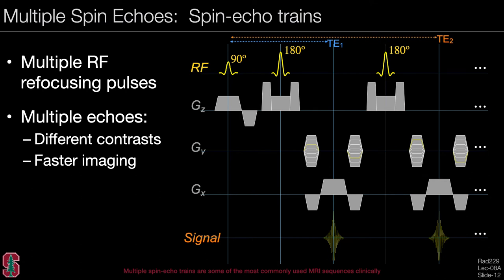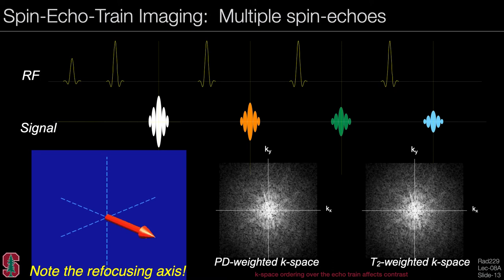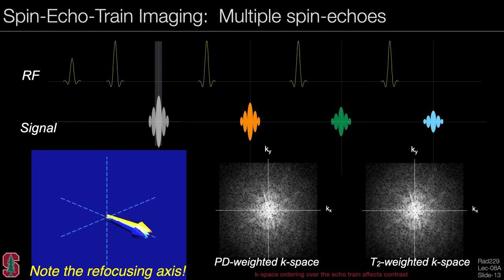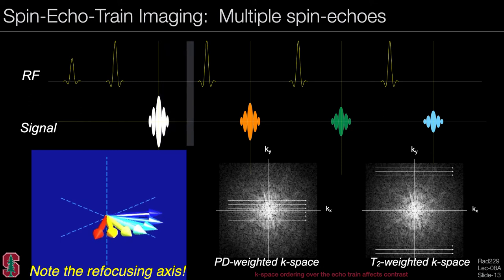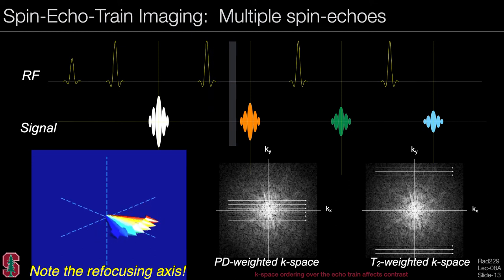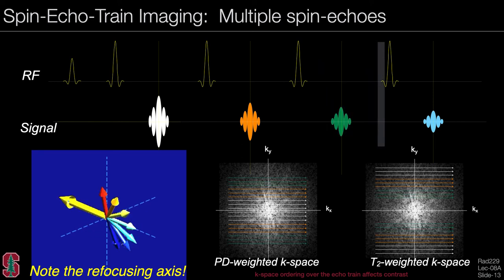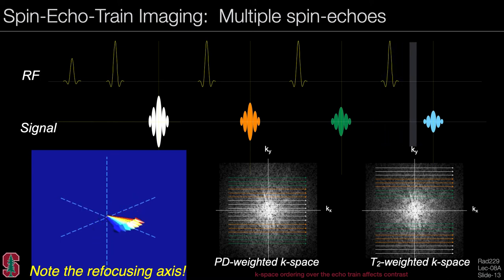In a spin echo train, multiple spin echoes are used but k-space is filled in a different order to achieve different contrasts. Starting with excited magnetization that is refocused, at each spin echo different parts of k-space are filled across multiple excitations. For proton density weighting, k-space is filled from the center out, and for T2 weighting, k-space is filled from the outside in.